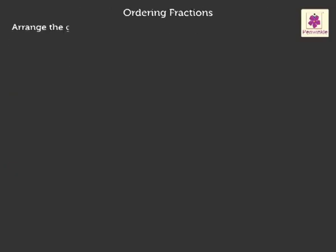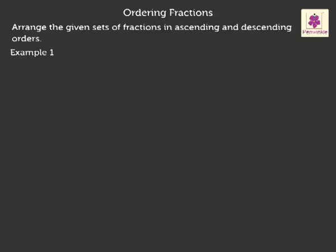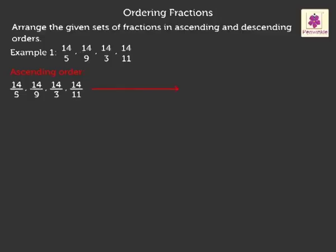Let us arrange the given sets of fractions in ascending and descending order. Example 1: the numerators are the same here, so denominators arranged in descending order give the fractions in ascending order as: 14 upon 11, 14 upon 9, 14 upon 5, and 14 upon 3.